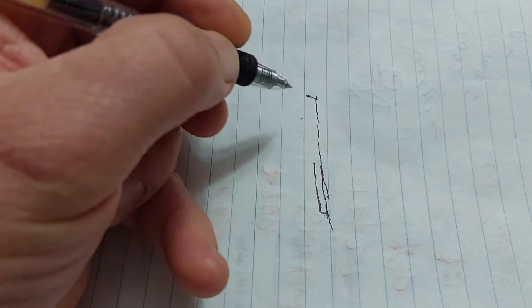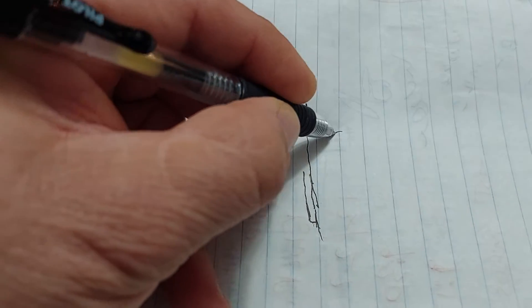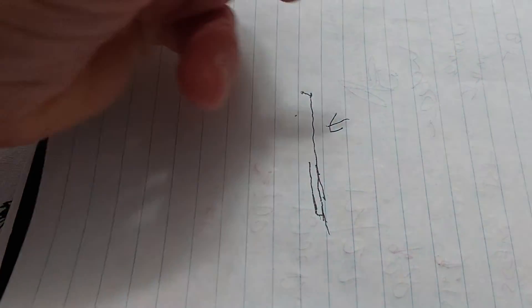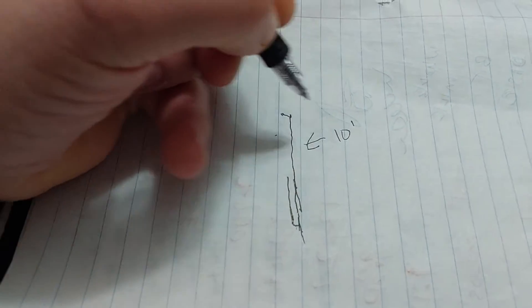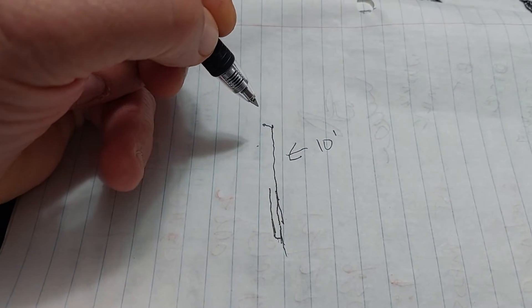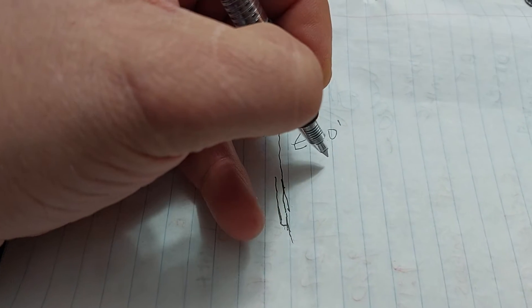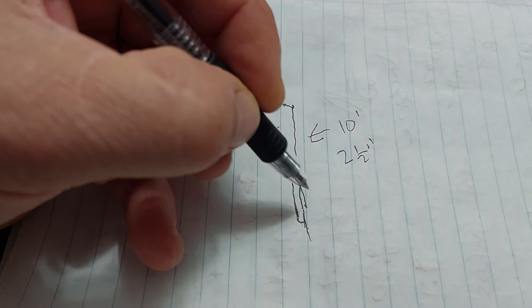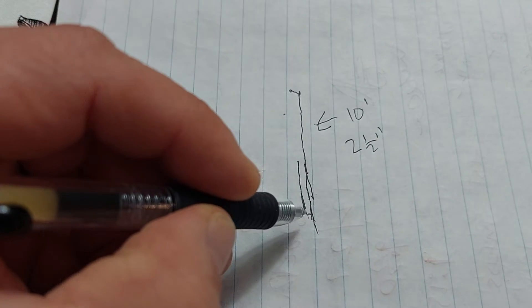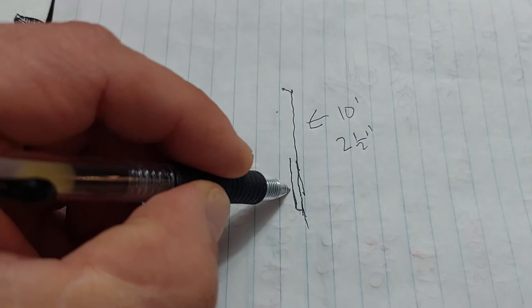This pipe cannot be more than 10 feet, and it can only have two and a half inches of grade. That is your trap arm for the toilet. So then you'll come here, put a Y here and go over to your shower.